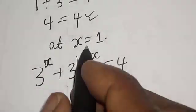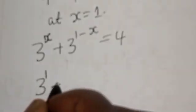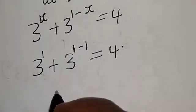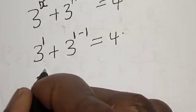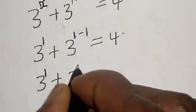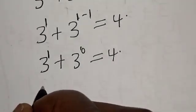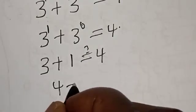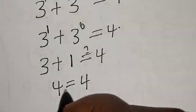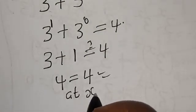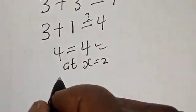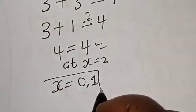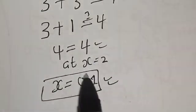At x equals 1: 3 raised to power 1 plus 3 raised to power 1 minus 1 must equal 4. That is 3 raised to power 1 plus 3 raised to power 0 must equal 4. Then 3 raised to power 1 is 3, plus 3 raised to power 0 is 1, which equals 4. So 3 plus 1 equals 4, which equals 4 — we satisfy the given equation at x equals 1. Therefore our final answers are x equals 0 and x equals 1. If you enjoyed the class, please don't forget to like, share, comment and subscribe.